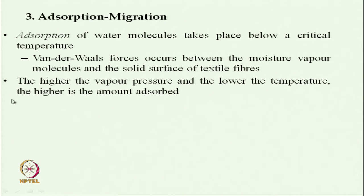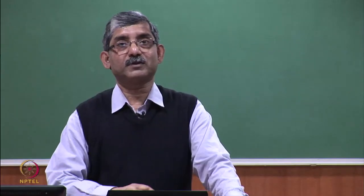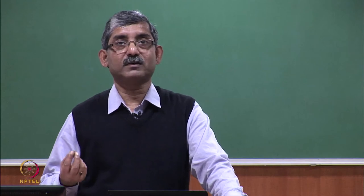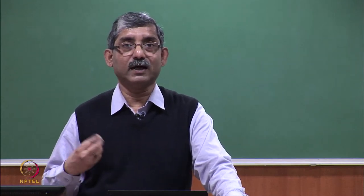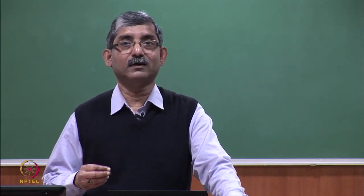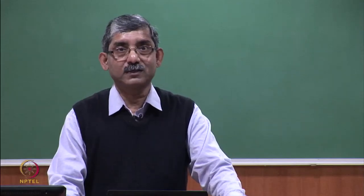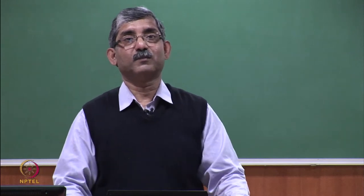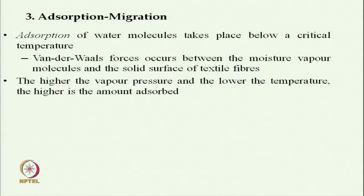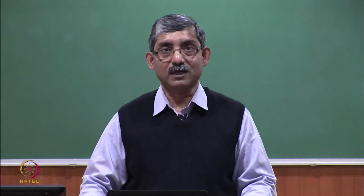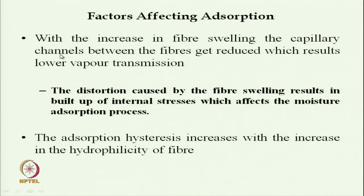At higher vapor pressure and at lower temperature, this adsorption takes place. So if the vapor pressure is high, that means moisture present in the air is very high, and at the low temperature this type of phenomenon takes place, where the moisture vapor gets deposited on the fiber surface. There are various factors which affect the absorption.